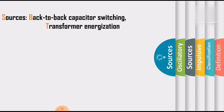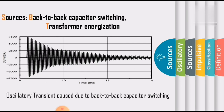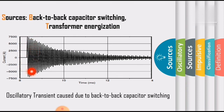The sources for oscillatory transients are back-to-back capacitor switching and transformer energization. This plot is a representation of the oscillatory transients due to back-to-back capacitor switching. On the x-axis we are considering time, and on the y-axis we are considering current. The obtained waveform for oscillatory transients due to back-to-back capacitor switching produces both positive and negative polarities — this section is positive and this section is negative.